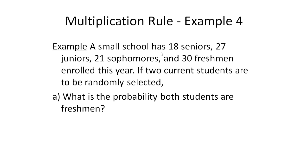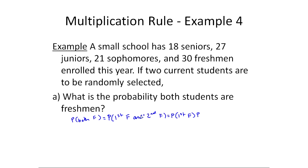The first question is: what's the probability both students are freshmen? I really want to write out the formula the first time. When I see 'the probability both are freshmen,' I'm thinking this is the probability the first is a freshman and the second is a freshman. The multiplication rule says if you're finding an 'and' probability, you take the probability of the first event and multiply it by the probability of the second given the first — so probability second is a freshman given the first was a freshman. This is the multiplication rule.